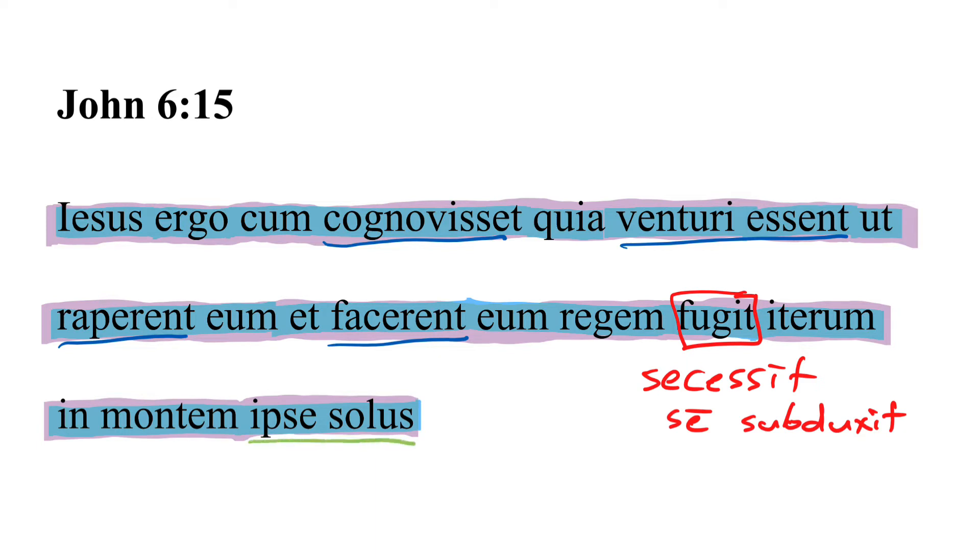Ipse solus here at the end very closely mirrors the Greek text, as this whole verse does in every spot, as usual with the Vulgate. He himself by himself went off again to the mountain, onto the mountain, we should say. And we've got in plus accusative there, as we've seen before.